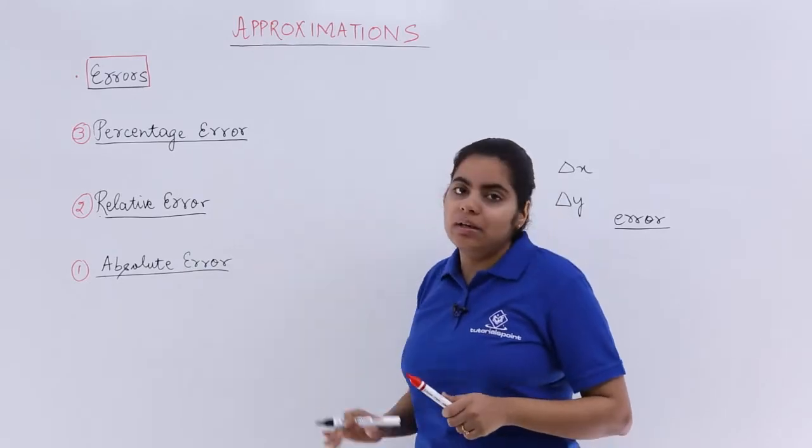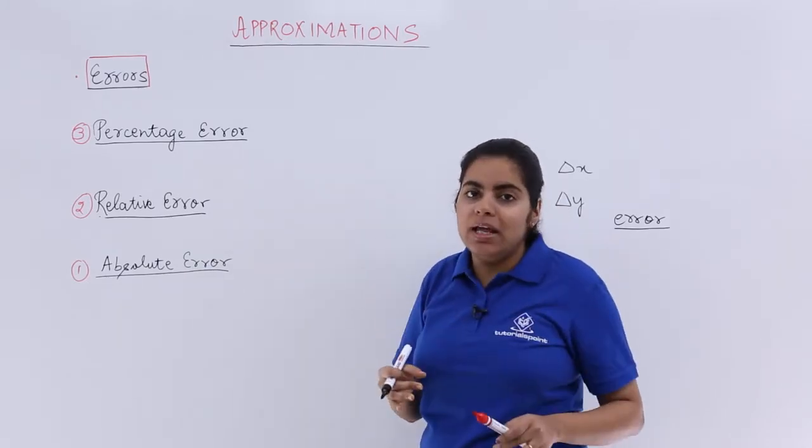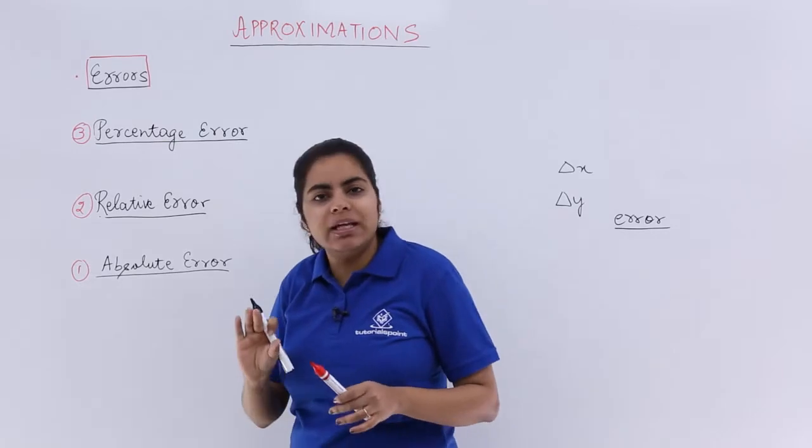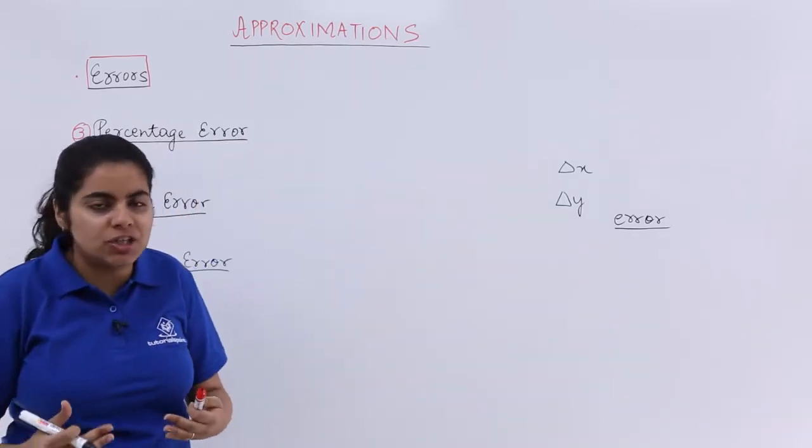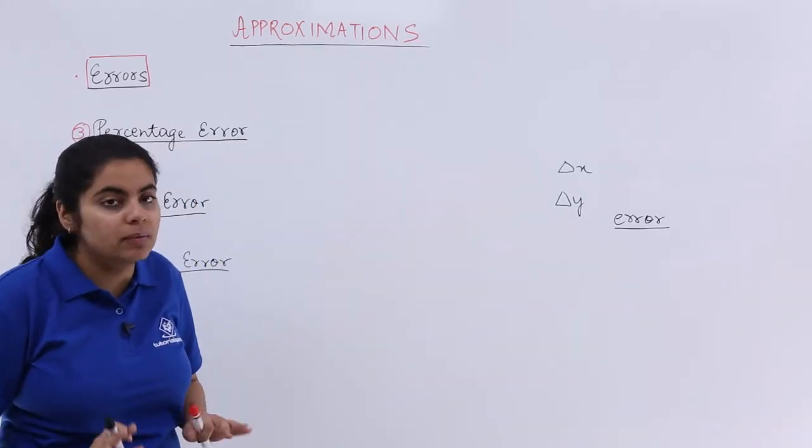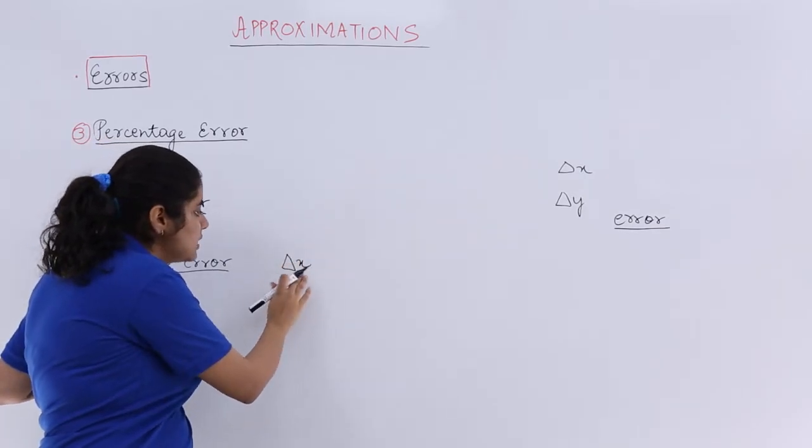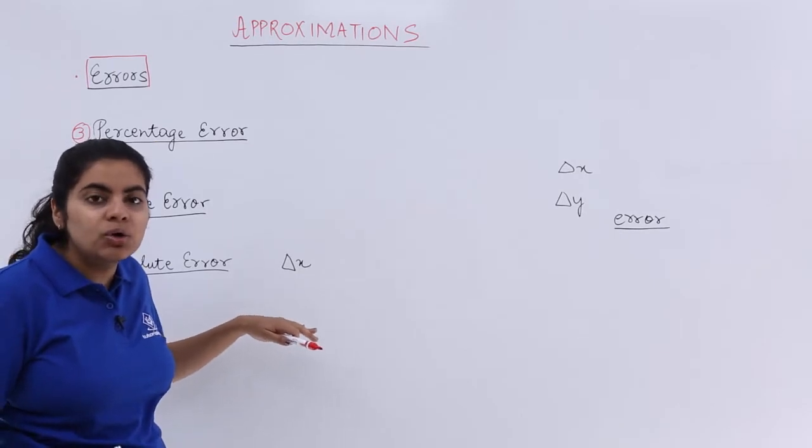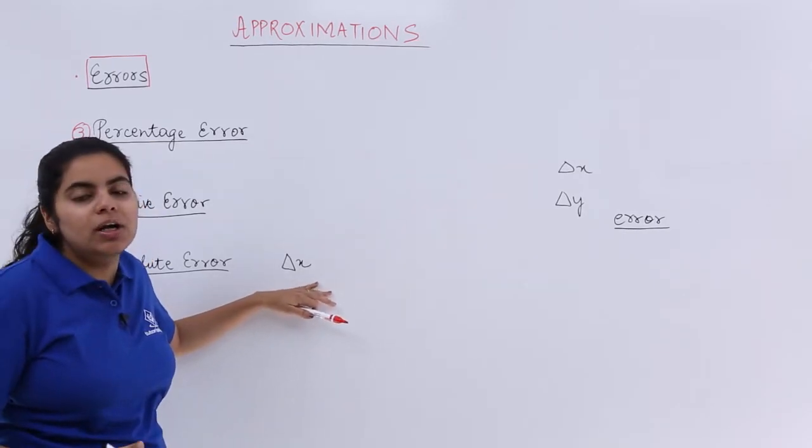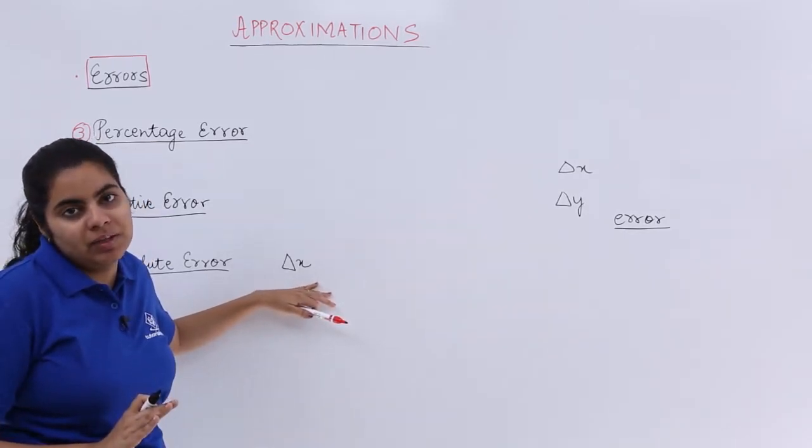Now absolute error is what? Absolute error is when you have a change in the value, that's it, the deviation as such in the value is called as absolute error. That means del x, that is a deviation, that is the deviation from the value, so that del x is called as simply absolute error.